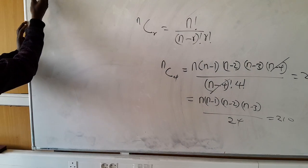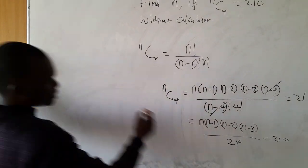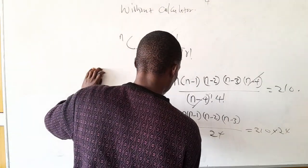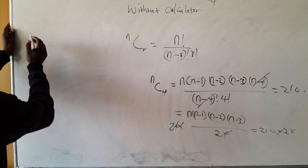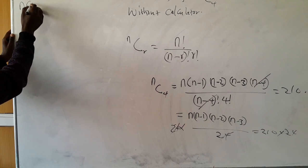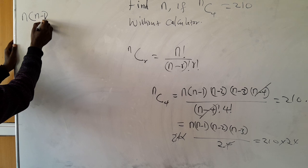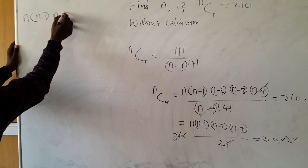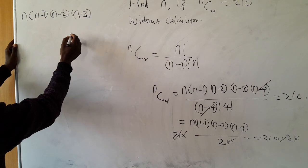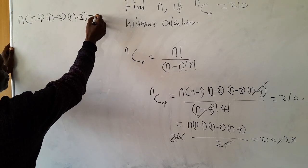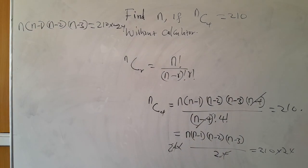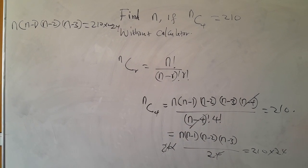We have, multiply by 24. n times n minus 1 times n minus 2 times n minus 3 is equal to 210 times 24. Are we together?